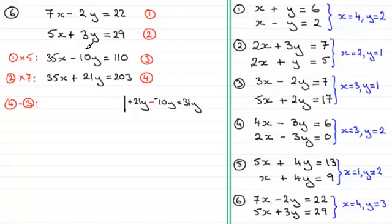So we've got 31y, therefore 31y equals, and we've got 203 now take away 110, which is 93. So dividing both sides now by 31 gives us y equals 93 divided by 31, which is 3.